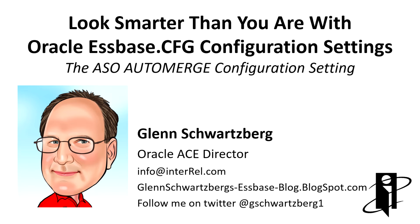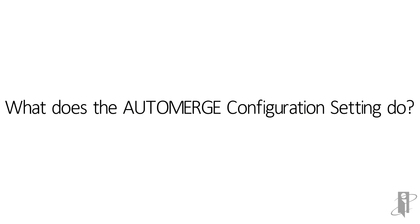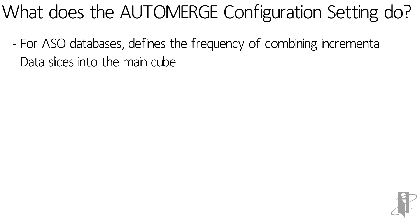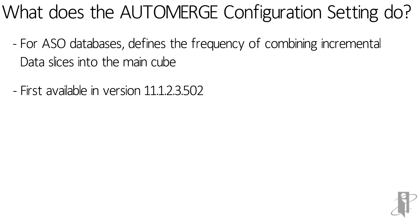Welcome to another Look Smarter Than You Are with Oracle Essbase video. I'm Glenn Schwartzberg, and today we're going to talk about the auto-merge configuration setting used for ASO cubes. For ASO databases, it defines the frequency of combining incremental data slices into the main cube. It was first available in version 11.1.2.3.502 and really became more available in 11.1.2.4.